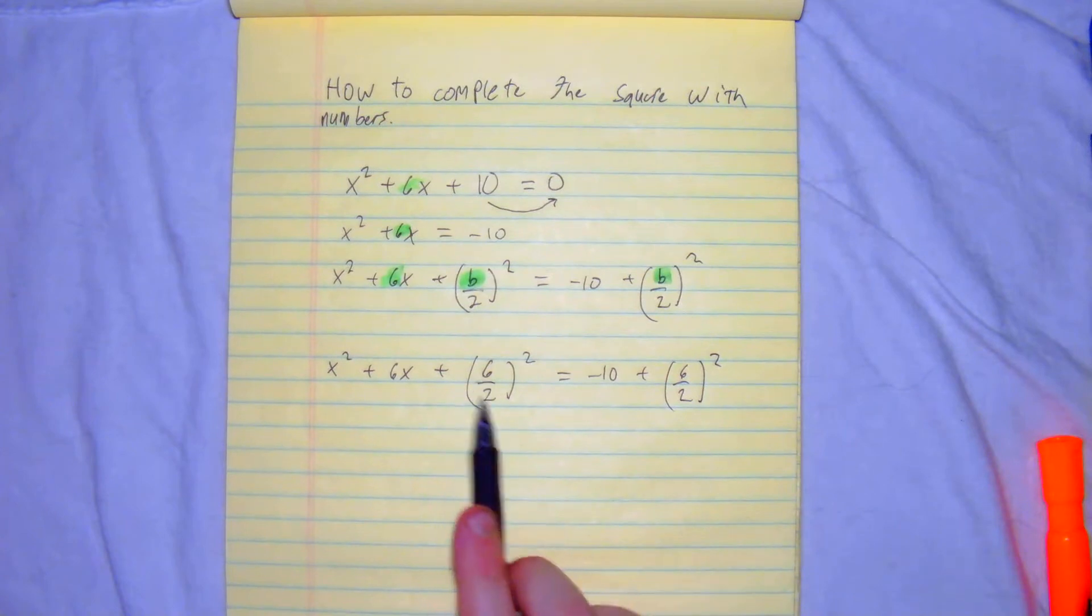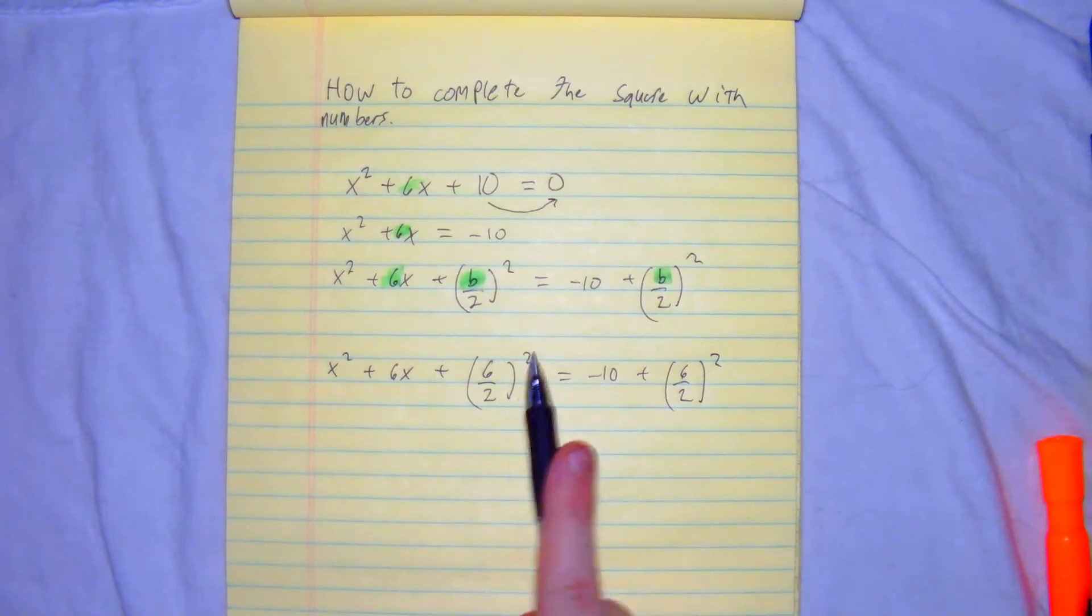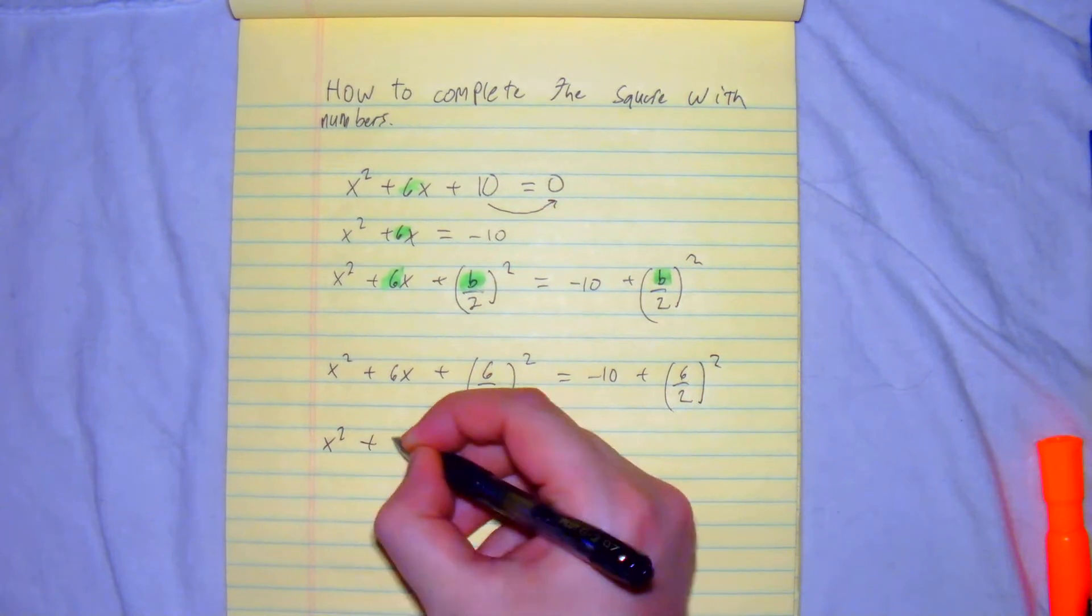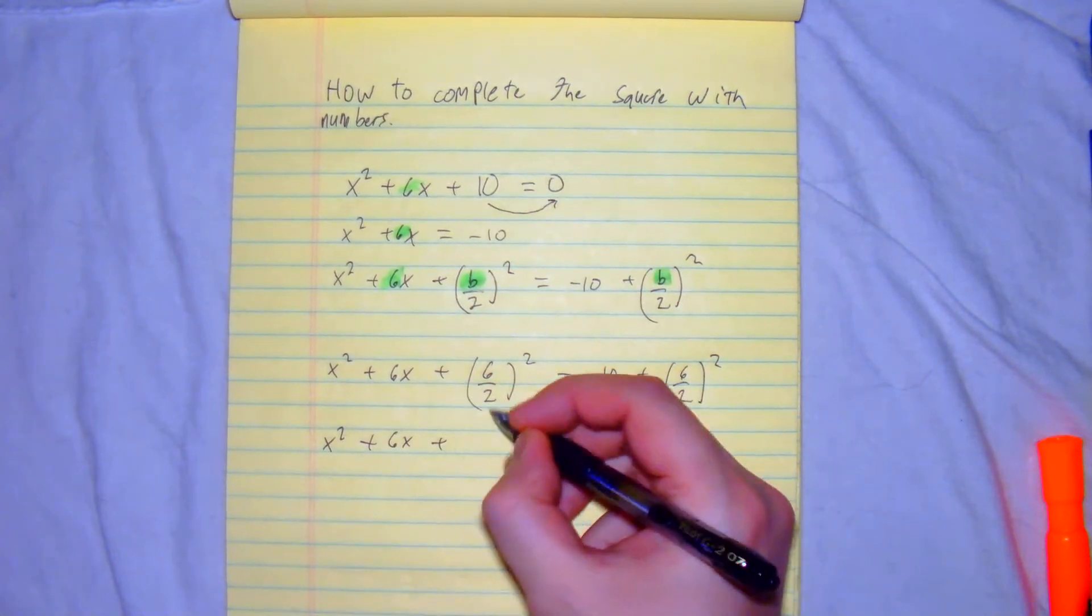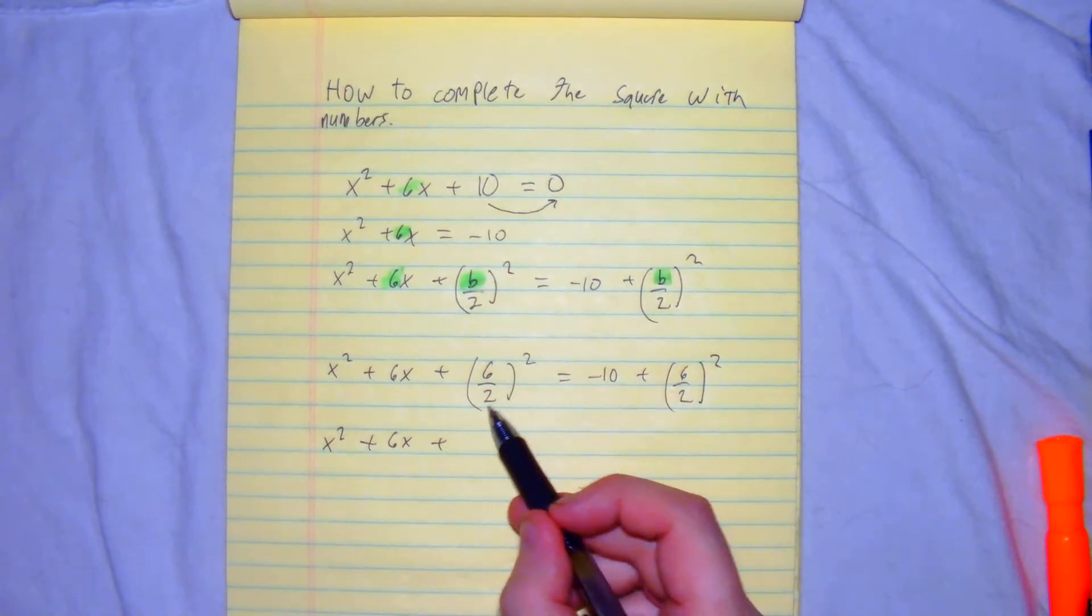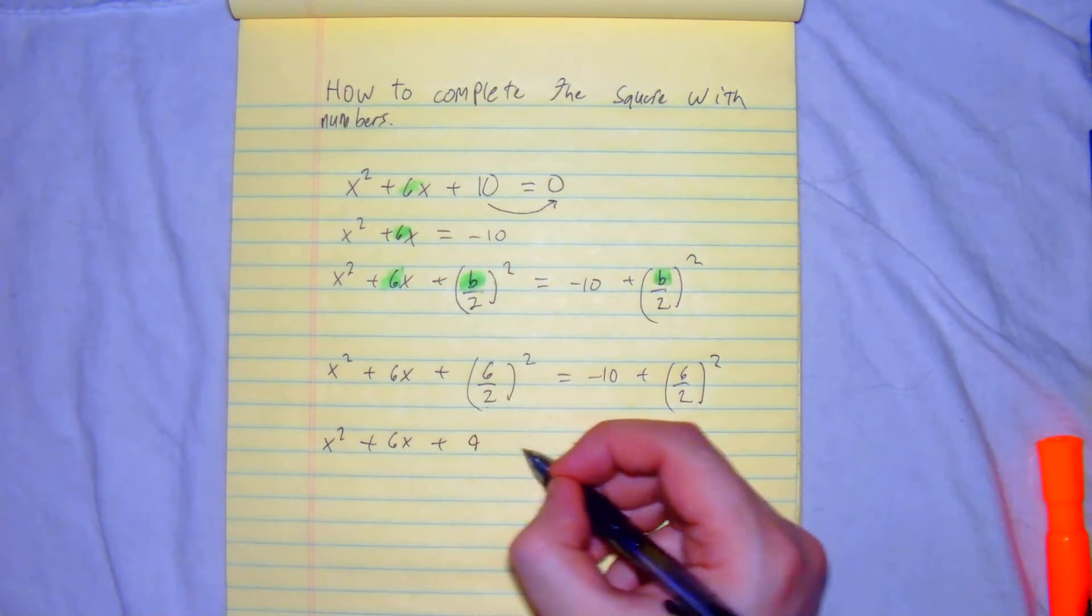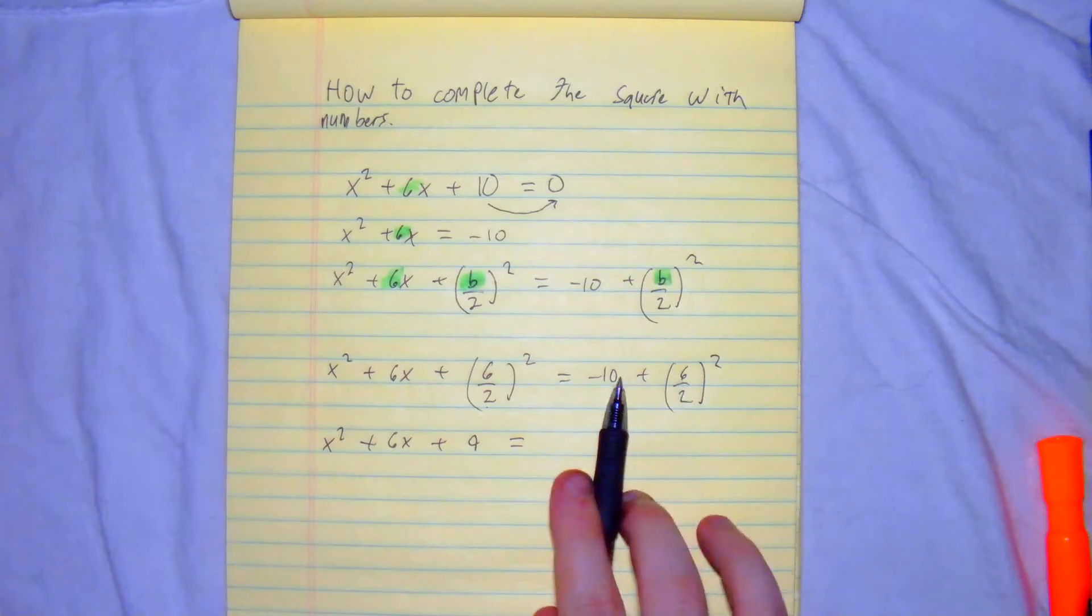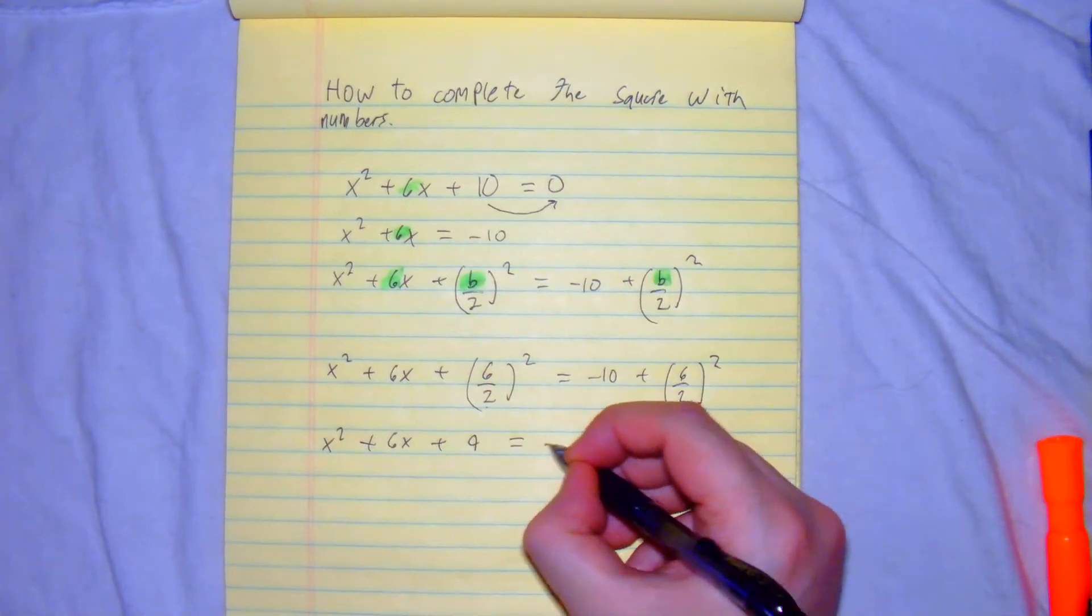So from here, 6 divided by 2 gives you 3, which would give you 3 squared. So now we're at x squared plus 6x plus 6 divided by 2 is 3. 3 squared is 9 equals minus 1.